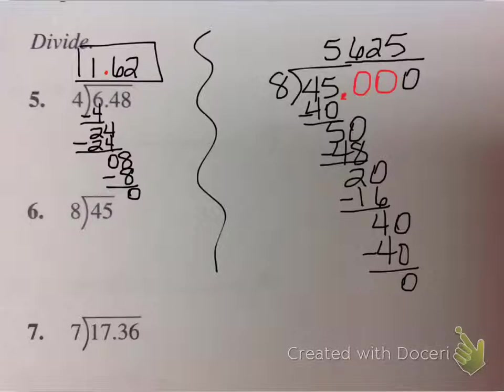So now where does my decimal point go? Well, I bring it straight up, so it's going to go between my 5 and my 6. So final answer is 5 and 625 thousandths.